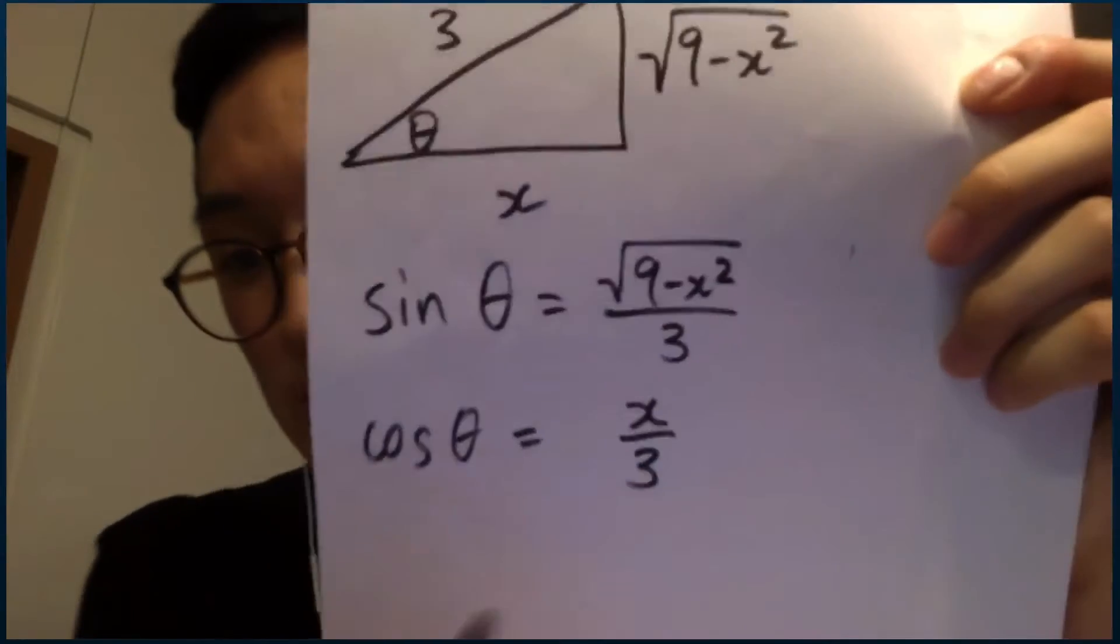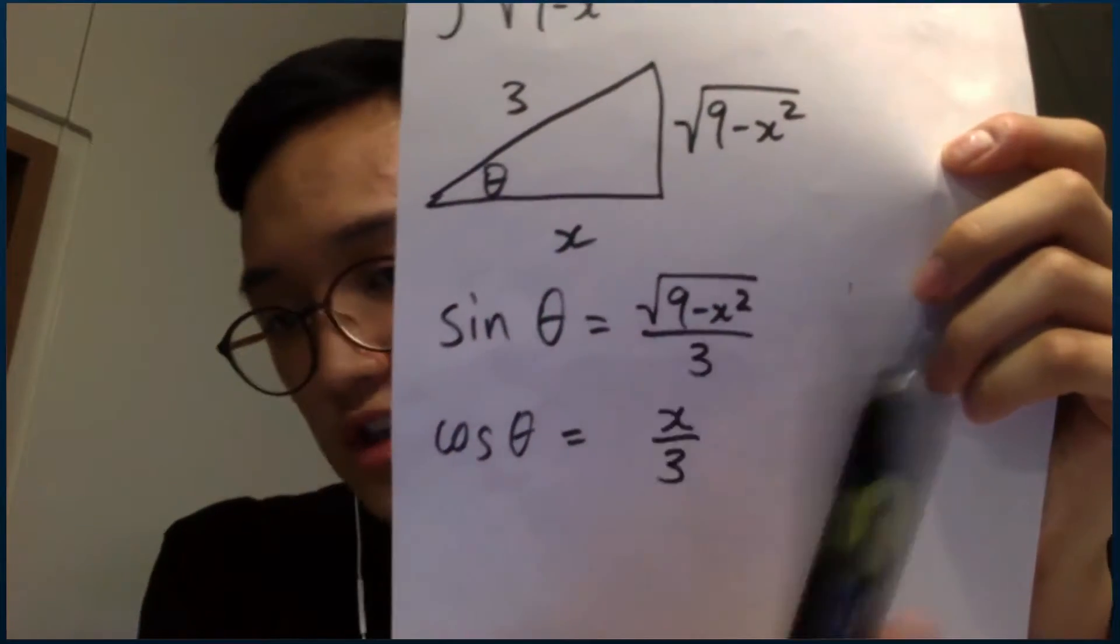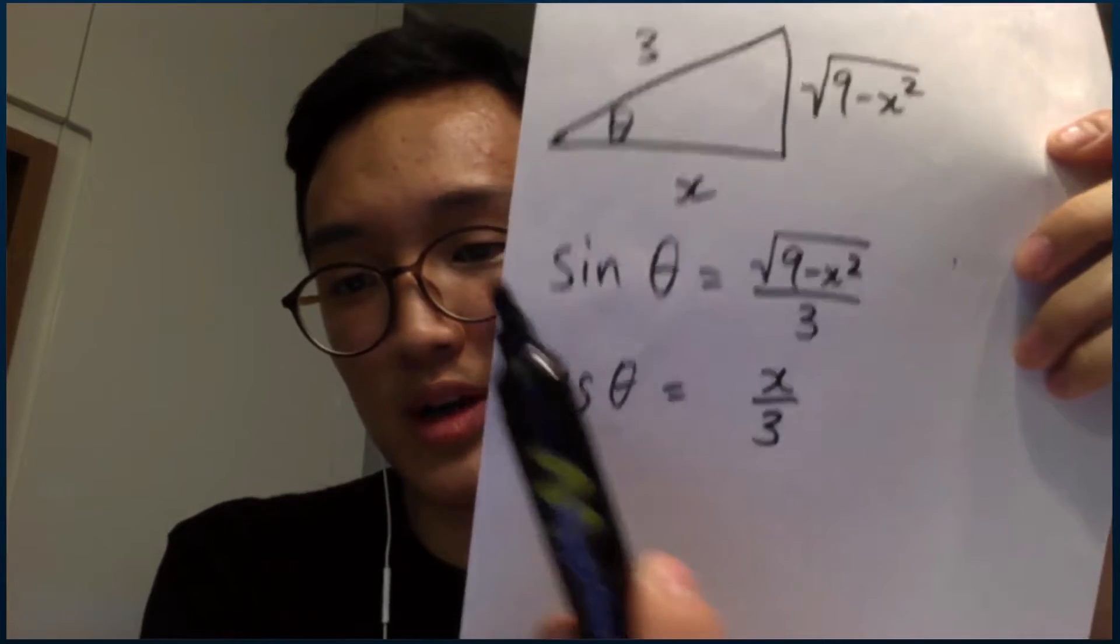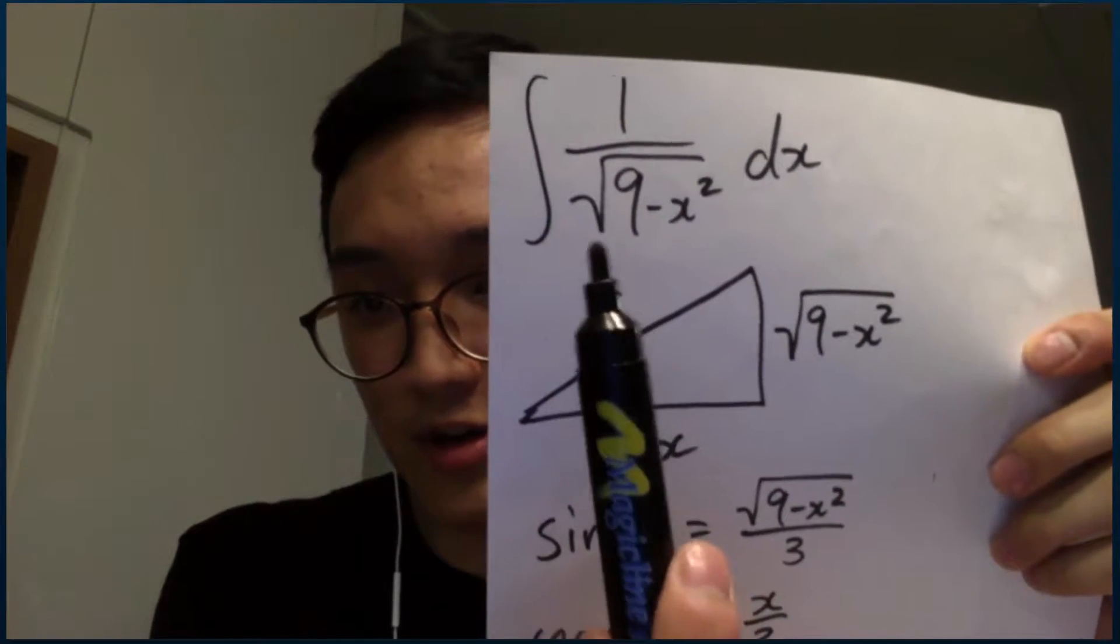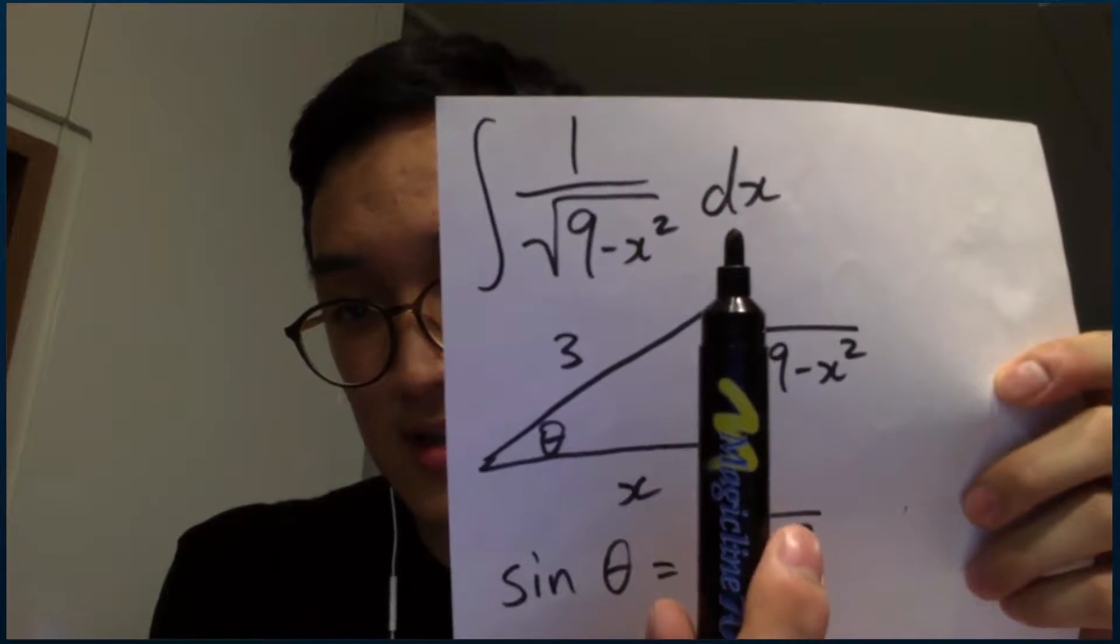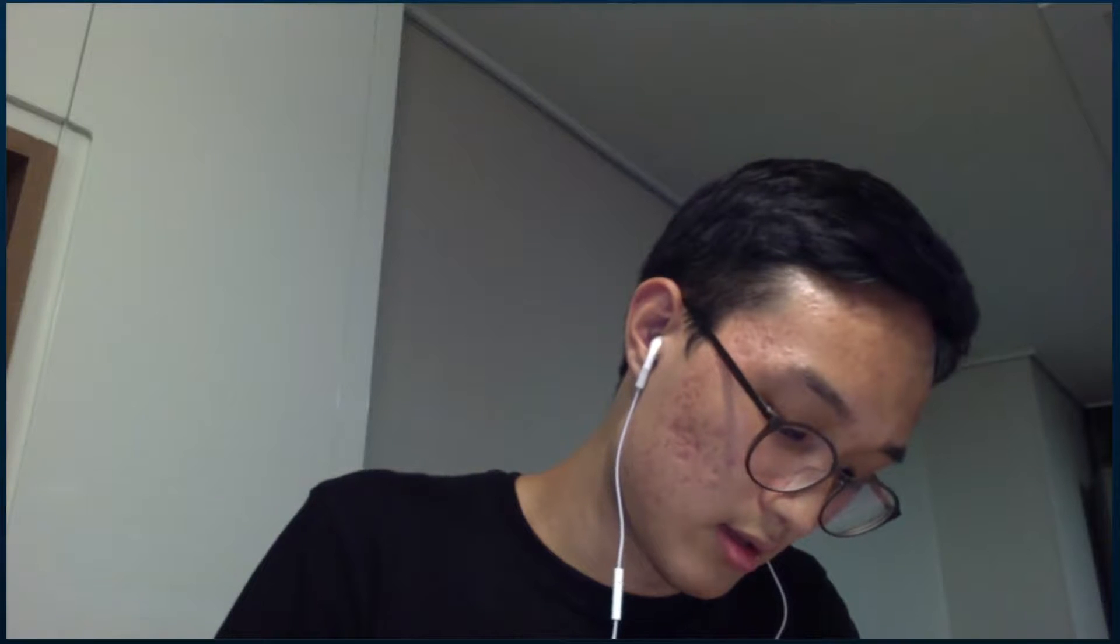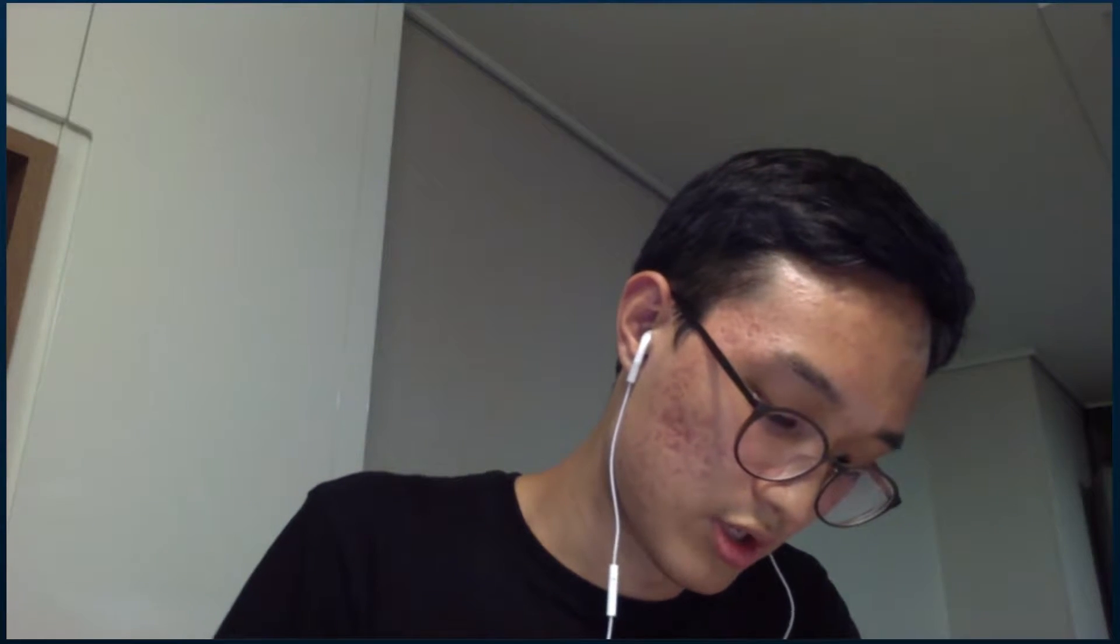So we get these two expressions by using the definitions of sine and cosine. And then using these, we can substitute, we can figure out what dx is in terms of theta and what the square root of 9 minus x squared is in terms of theta. And then we'll get the following expressions.